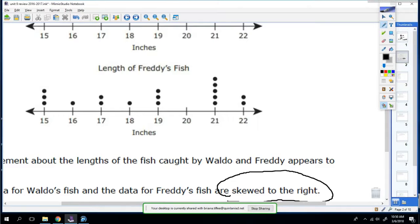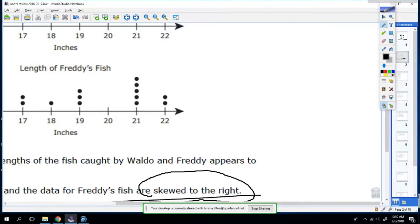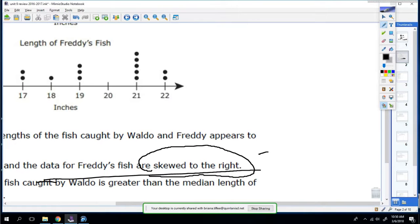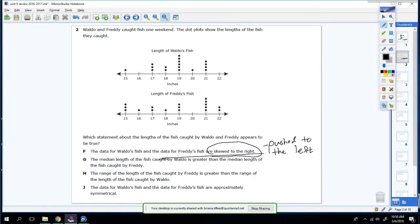So we really have not talked about what it means to be skewed right. So what it means to be skewed right means that most of the data is pushed to the left. So if it says skewed right means most of the data is on the left. Well, so it says that Waldo and Freddy's fish are both skewed right. Well, that means that majority of their data should be right here on the left. Well, it's not. The data is actually pretty evenly distributed between the number line. So F is wrong, because that's not true.